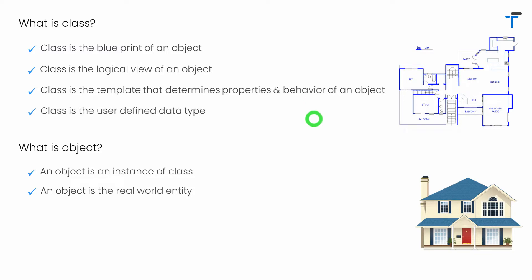We can also say a class is the user-defined data type. In fact, a class is a data structure that allows us to encapsulate the data and the methods that perform operations over the data, in order to keep it secure from the outside world.